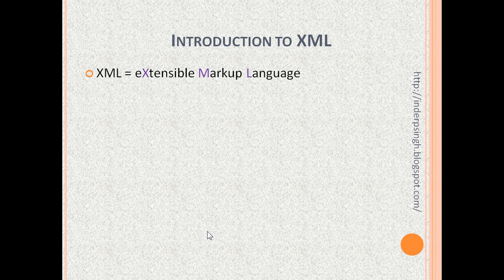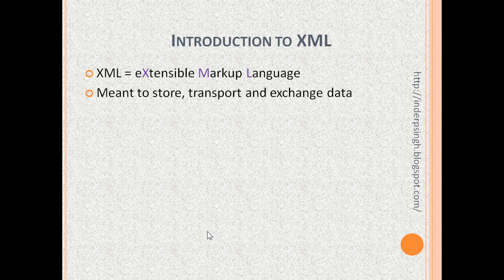We'll see examples of an XML document and how to extend it in this video. XML is meant to store, transport, and exchange data. We can store XML data as strings, in text files, or even in database tables. XML can also be used to transport data across the network and to exchange data between software applications or machines.